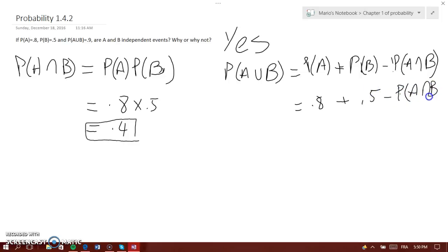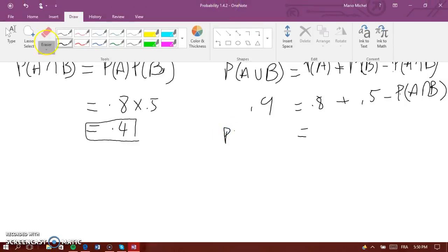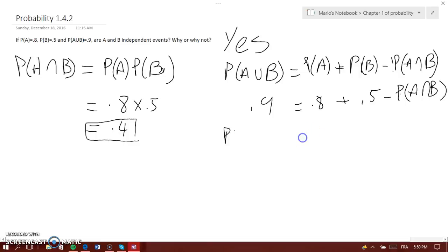P(A union B) is equal to 0.9. Now we can see that P(A intersection B) equals 0.8 plus 0.5 minus 0.9, which equals again 0.4.